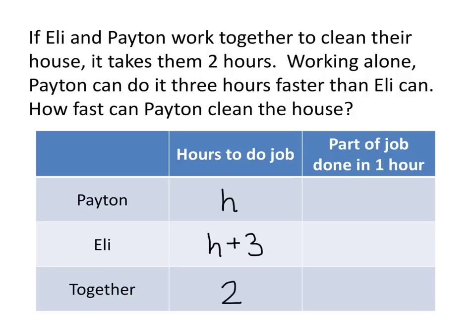Now what we want to do is think about how much of the job gets done by each of these folks in one hour. If Payton can do the entire job in h hours, then in one hour, Payton does one divided by h of the job. Think about it this way: if Payton did the whole job in ten hours, then in each of those ten hours, Payton did one-tenth of the job.